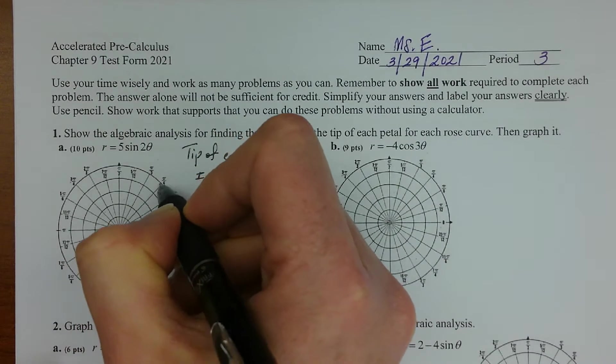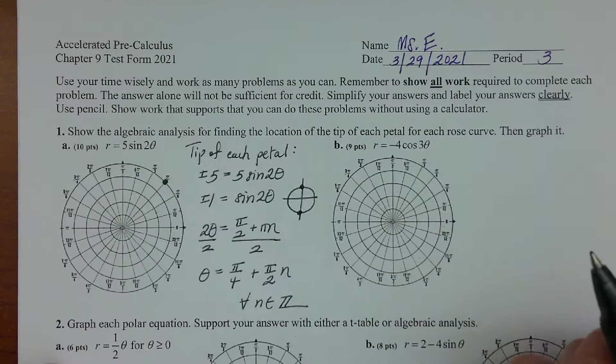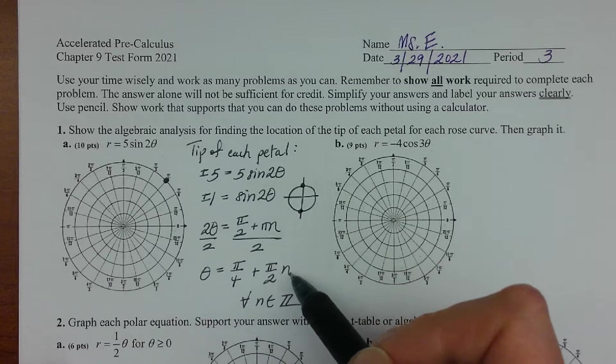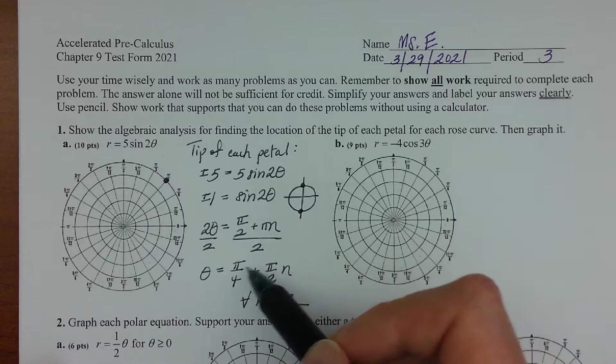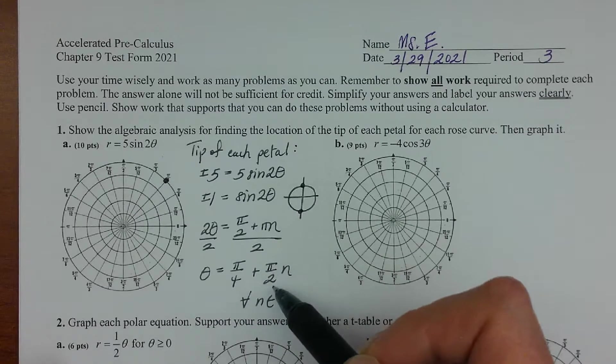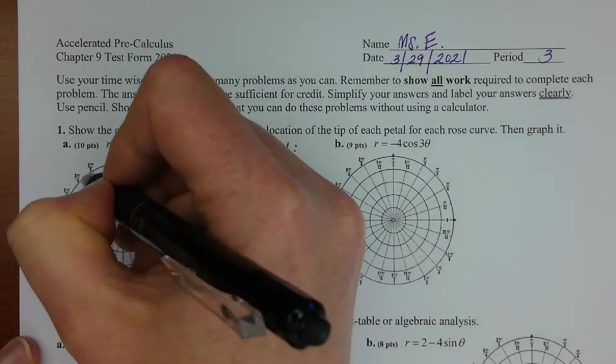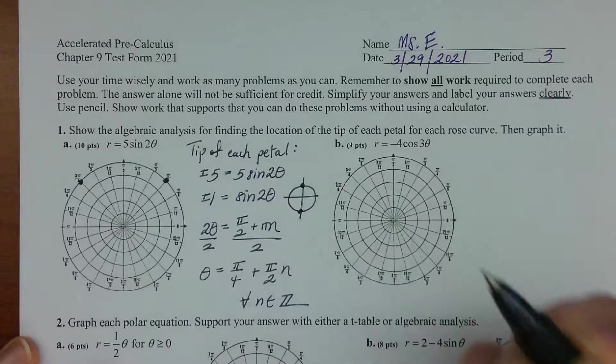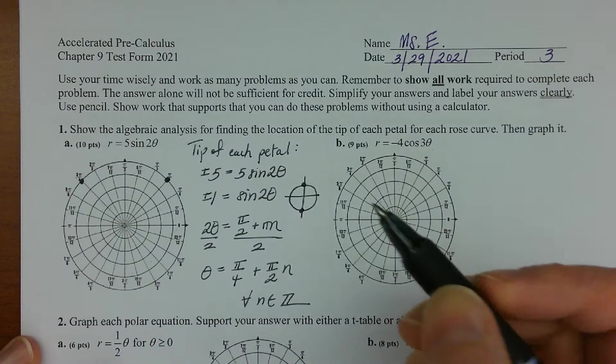So like if n was zero, for example, theta would be pi over four. So at pi over four, one two three four five, I would have a tip of a petal there. Let's see, if n was one, I could just have pi over four plus two pi over four which would be three pi over four.